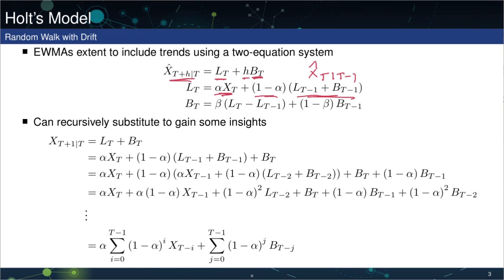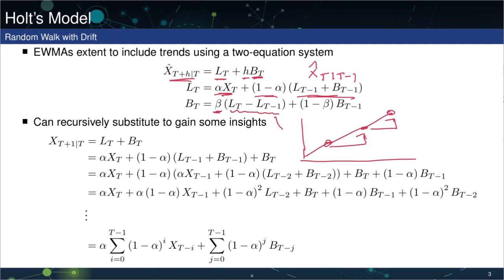The level has a sort of SES-like structure; however, now it's going to have a different parameter, beta, which allows a different level of smoothing. The key difference is really the shock: the shock to the trend is not just a function of X_T, but depends on the difference between the levels across two consecutive periods. The difference of the level over periods is a reasonable measure of the trend, and so Holt's model uses the innovation to the level to measure the trend.